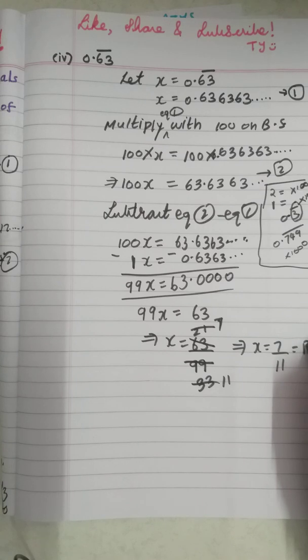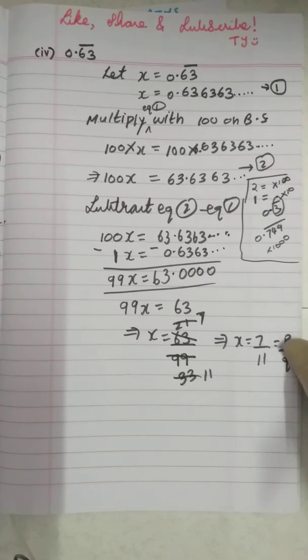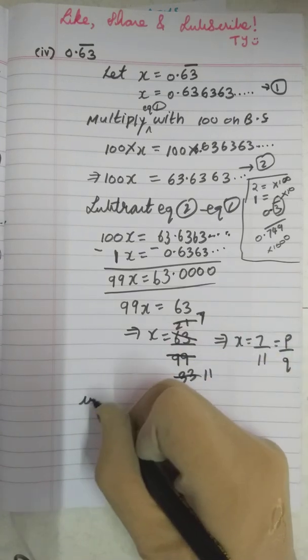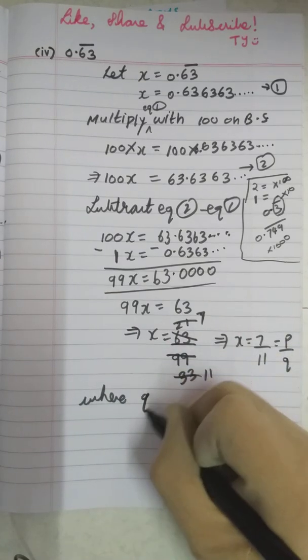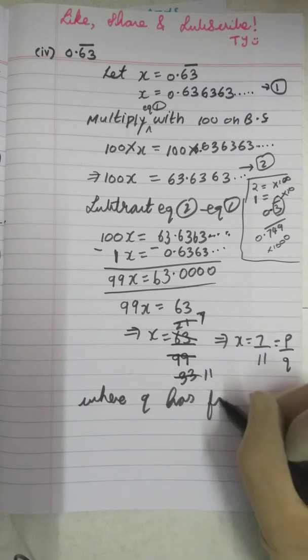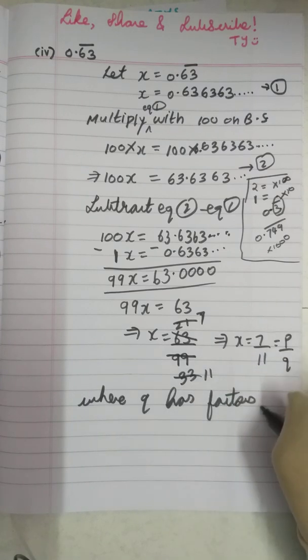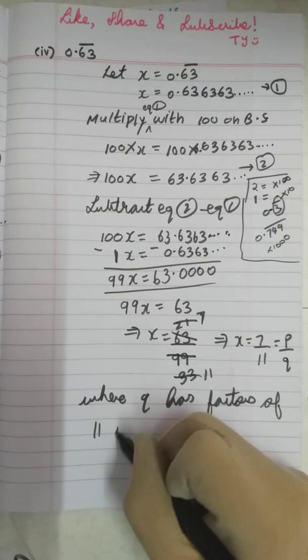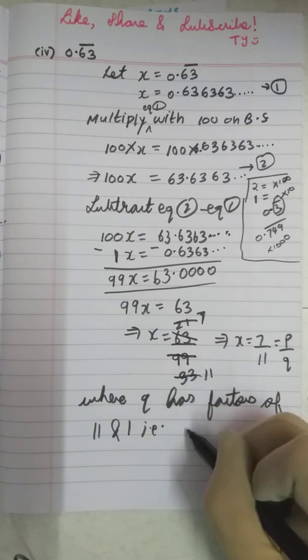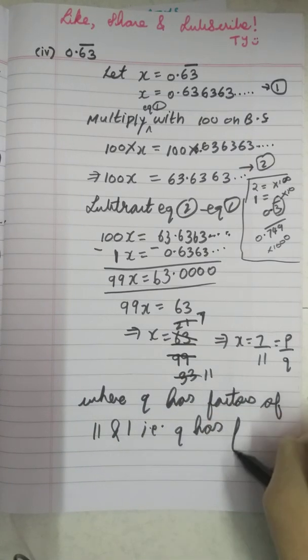So we have expressed it in the form of P by Q. It told us to express the rational number in the form of P by Q. So here we can write that. What are the factors of Q? Q has factors of 11 and 1. That is, Q has factors other than 2 and 5.